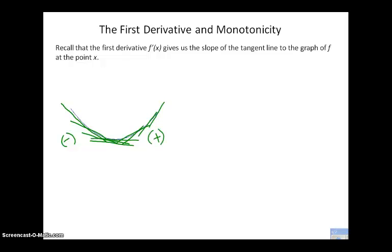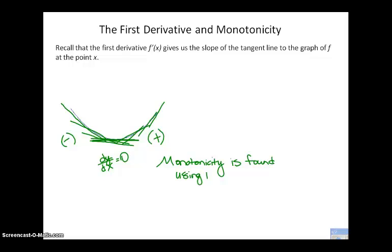Right in between those two regions we had an input value where our derivative equaled zero. It turns out that monotonicity can be found using the sign of the first derivative.